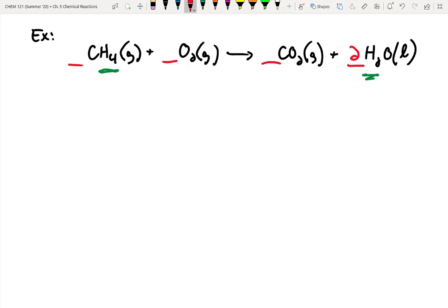So I'm going to go ahead and double this side so I have four hydrogens on each side. Now let's go to oxygen. Over here I've got two, over here I've got two plus two, so I have four. So I must have a two in front of here. The other ones are going to be assumed to be ones, so we don't necessarily have to include them.